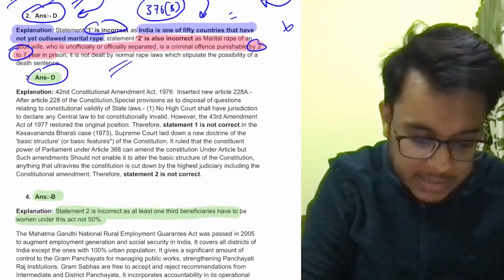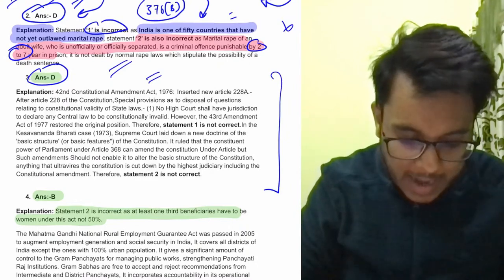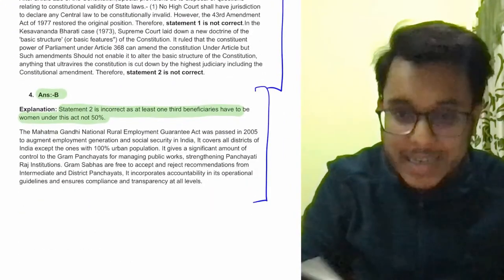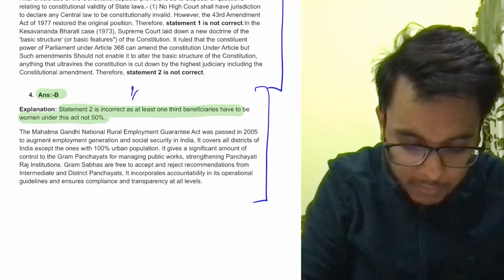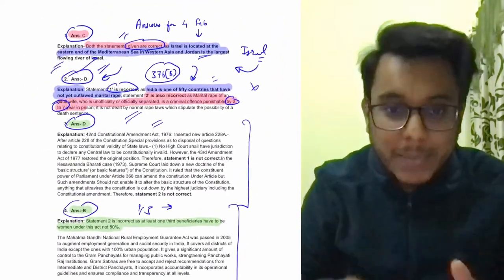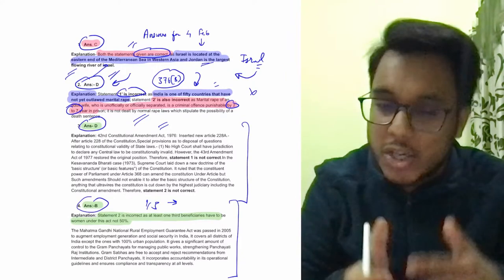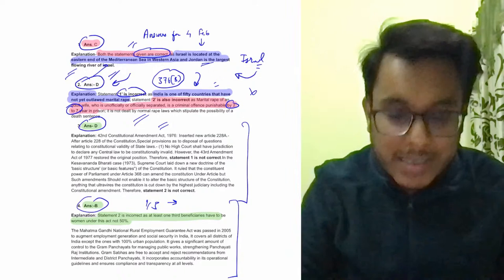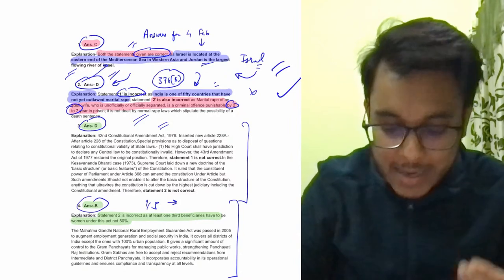Question 3 — correct answer is D, detailed solution provided. Question 4 — correct answer is B. This was about MGNREGA: one-third of the beneficiaries need to be women. The entire PDF with explanations will be shared on the Telegram channel. Please keep posting your answers and maintain the streak.